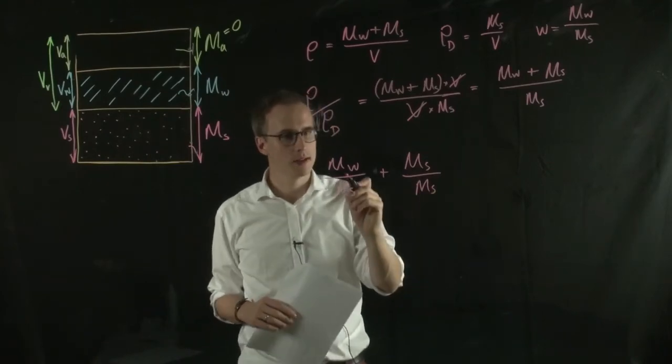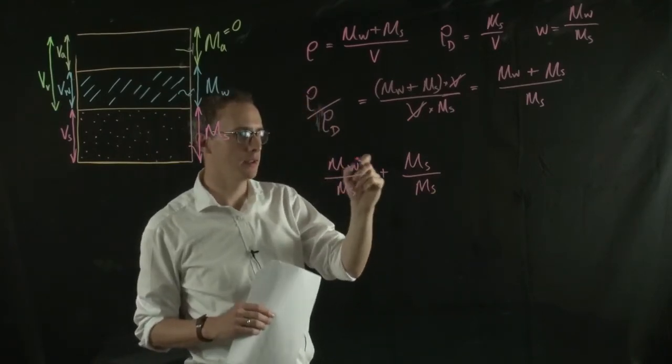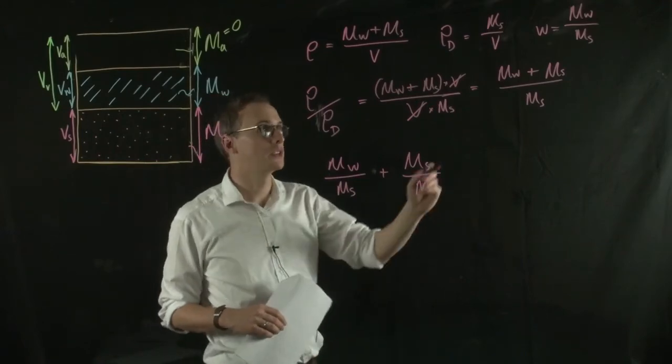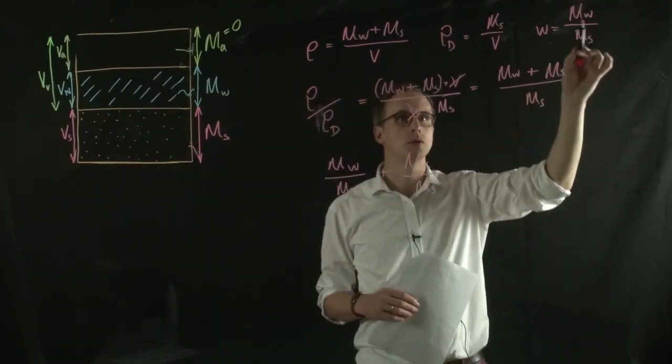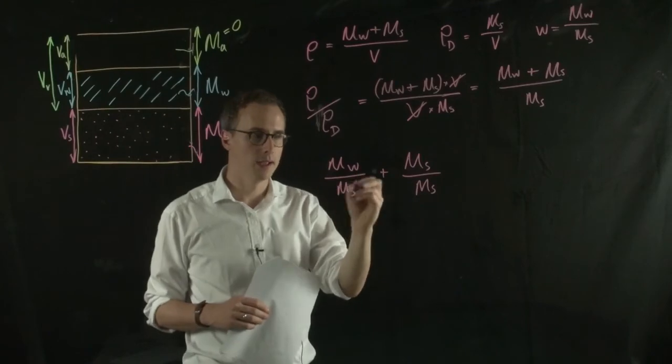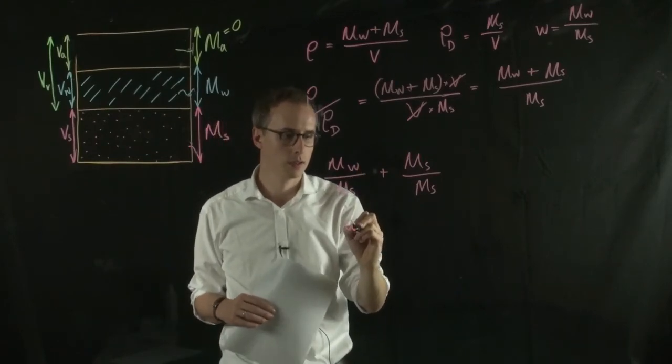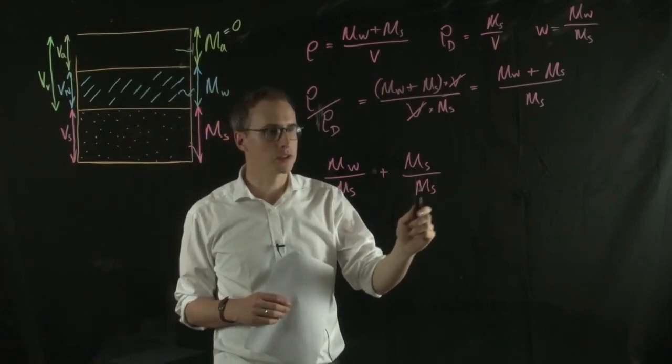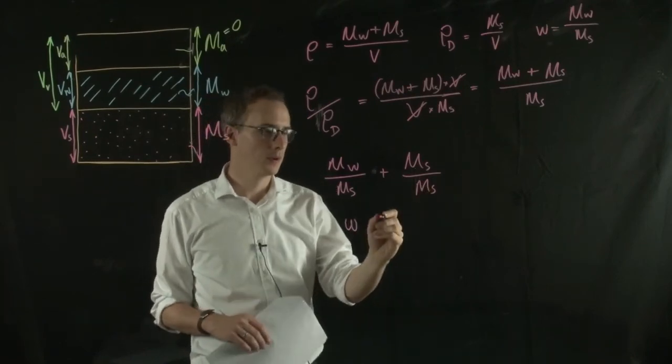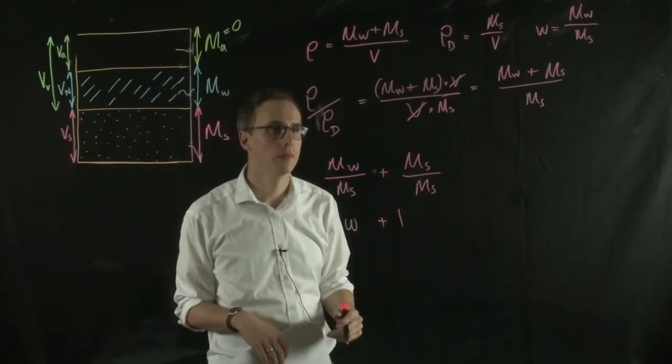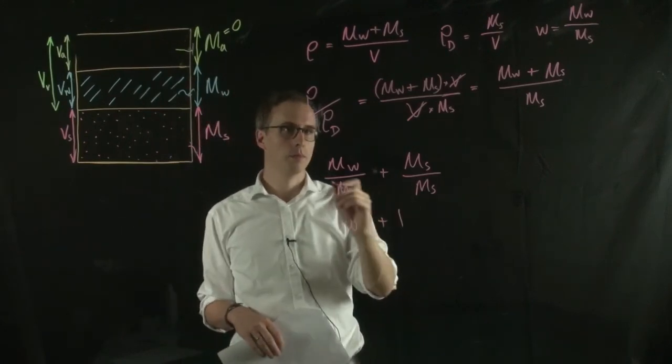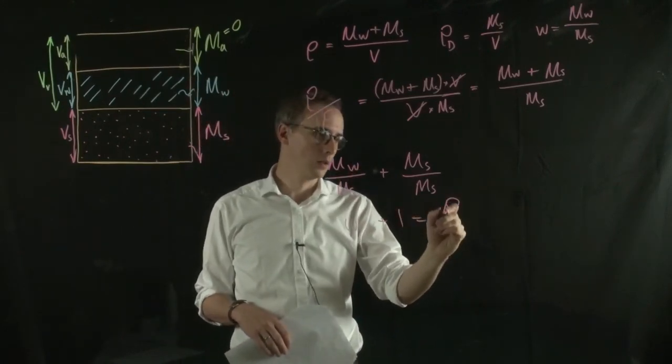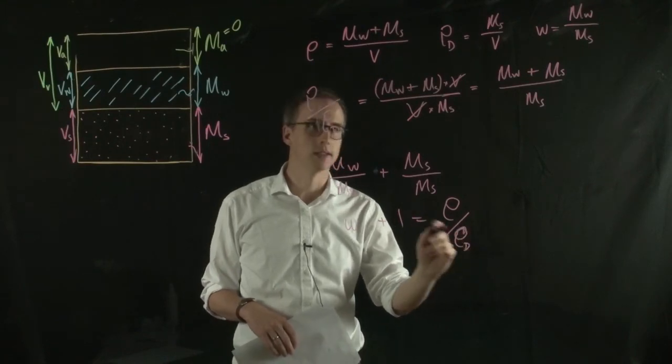Now what you can see here is what we've got here, is mw over ms, which is, in fact, the water content. So we can replace this value here with just w, the water content, and you can see that we've got ms over ms here, which must be 1, so plus 1, and that equals the bulk density over the dry density.